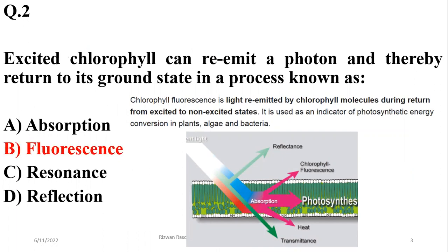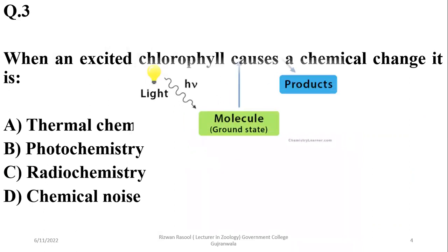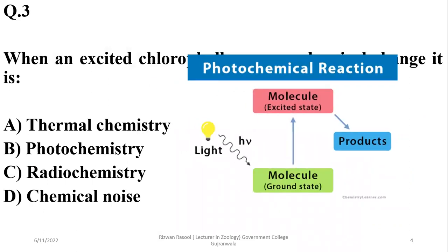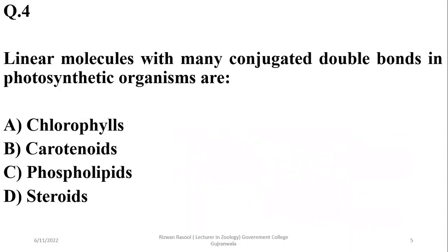Photosynthesis involves energy conversion in plants, algae, as well as bacteria. Question three: When an excited chlorophyll causes a chemical change, it is basically studied under photochemistry. An excited chlorophyll molecule undergoing a chemical reaction — that is photochemistry.